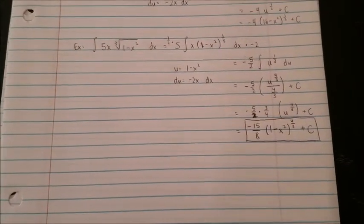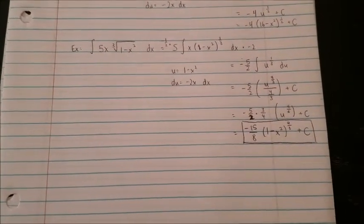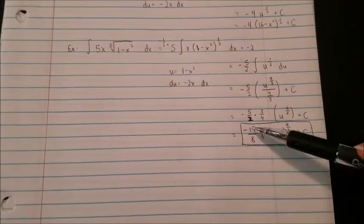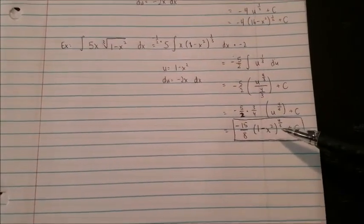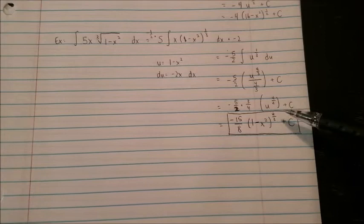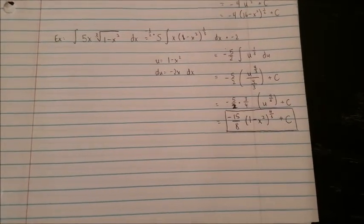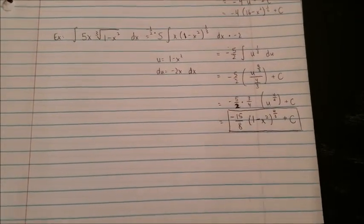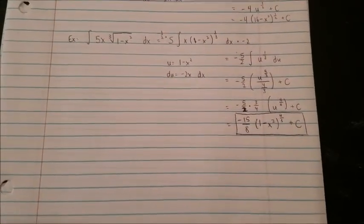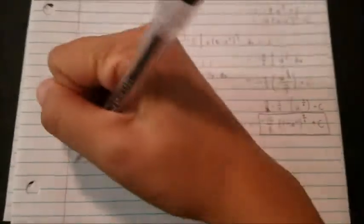The answer you should have gotten is negative 15 over 8 times 1 minus x squared raised to the 4 over 3 power, plus c. Now here's where I want to move on to the new stuff.